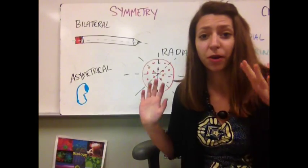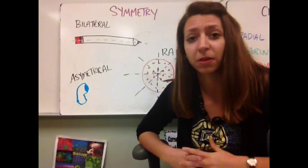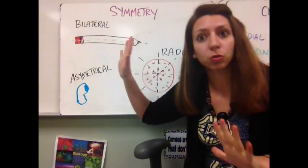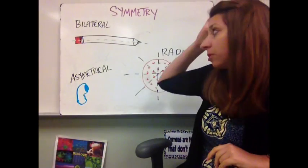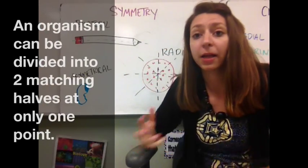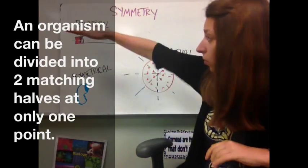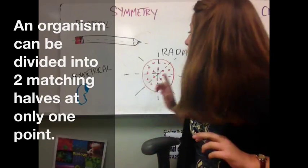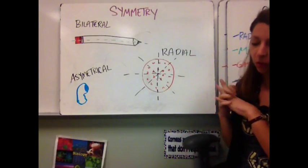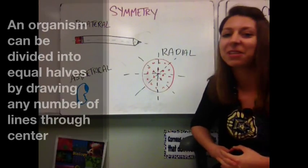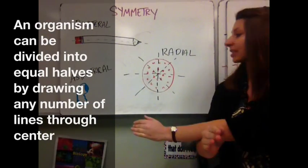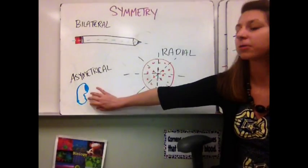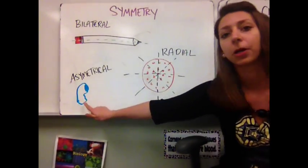Before we get into the details of all of our invertebrate phyla, I want to talk a little bit about symmetry because it's going to be used to describe different organisms. First we have bilateral symmetry, which is kind of what we are — an organism with bilateral symmetry can be divided into two matching equal halves, but at only one point. On the other side, we have radial symmetry, where an organism can be divided into equal halves through its center at several different points, kind of like a pizza or an orange. And then we have things that are asymmetrical, or don't have any symmetry, like this sad little sponge over here.